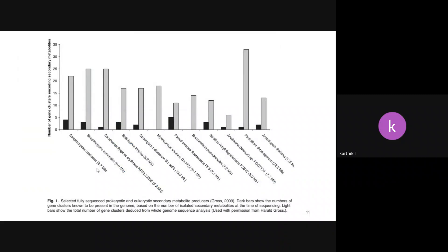Whole genome sequencing is now easy. Several fungal and bacterial genomes are available in the NCBI database. But still we are unable to find many new molecules. The problem is the term called cryptic or silent genes.